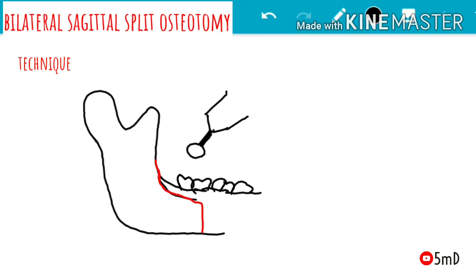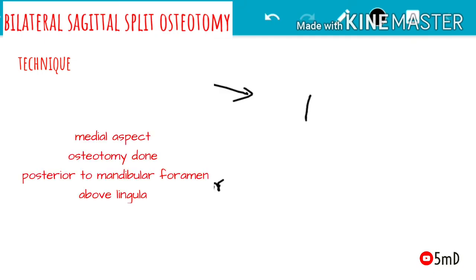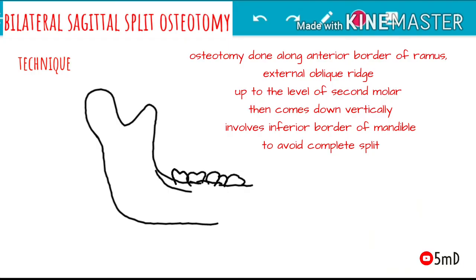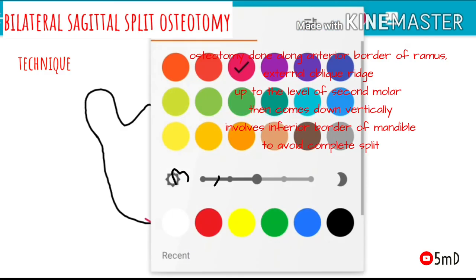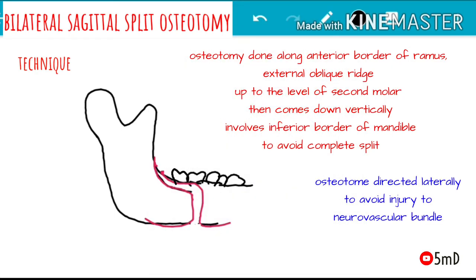After the incision and flap reflection, osteotomy is done by cutting the cortical bone alone. Our aim is to reach the cancellous bone and not to achieve a complete split. In the medial aspect, the cut extends just posterior to the mandibular foramen and above the lingula. Anteriorly, the cut is taken to the anterior border of the ramus and continued along the external oblique ridge along the incision, but stopped at the level of the second molar region. After which a vertical cut is given, and the cut is also continued in the inferior border.